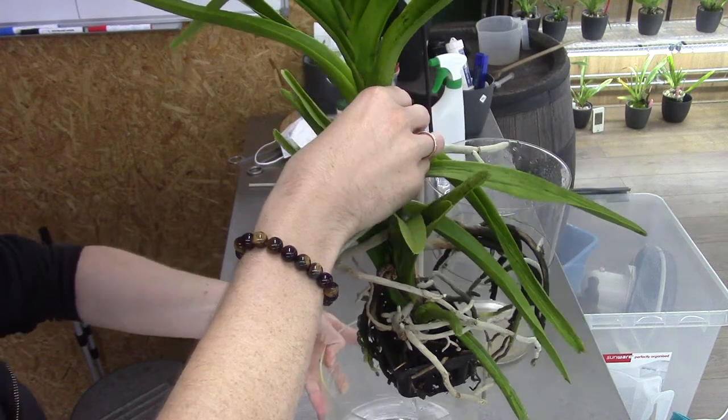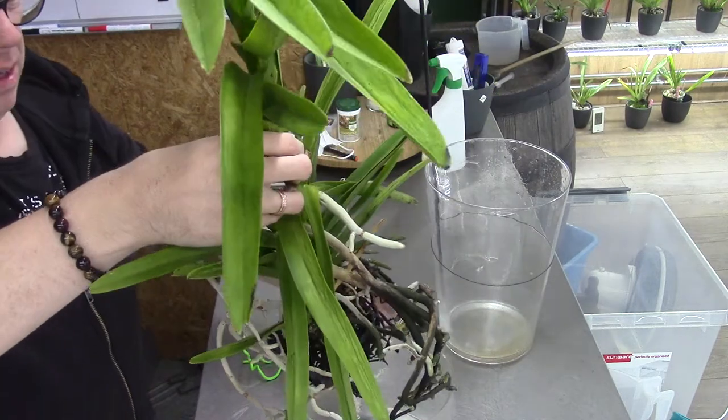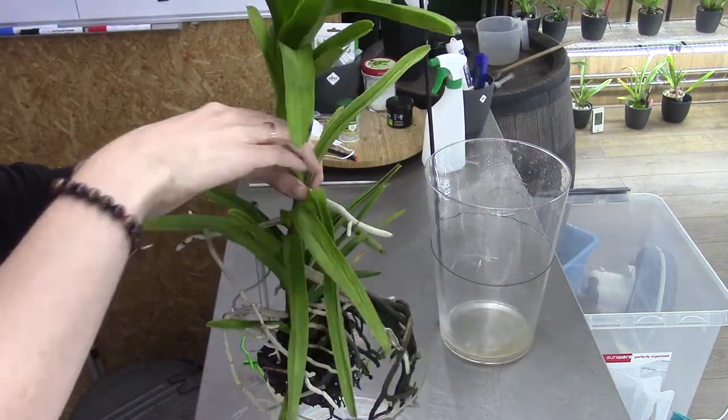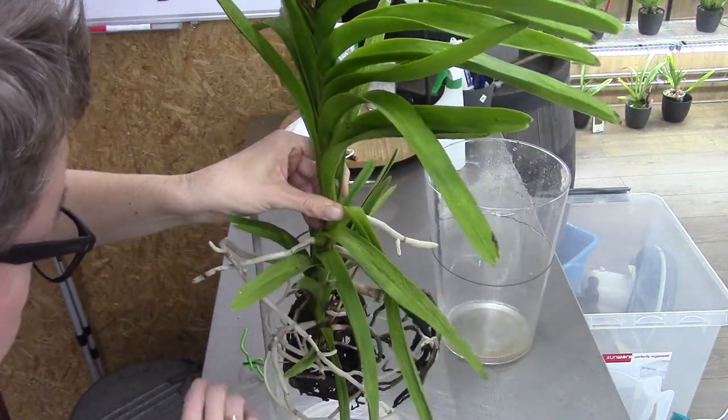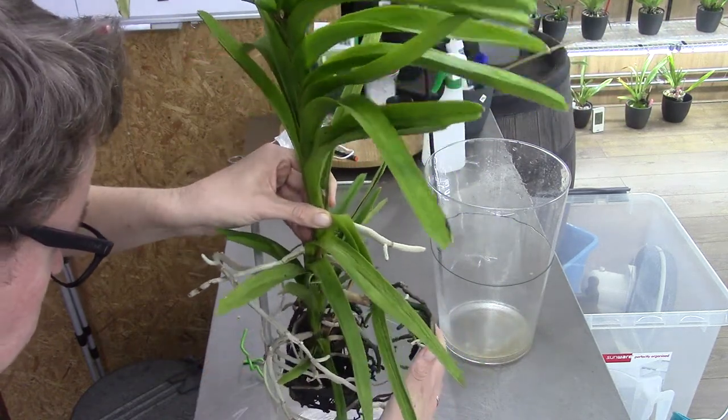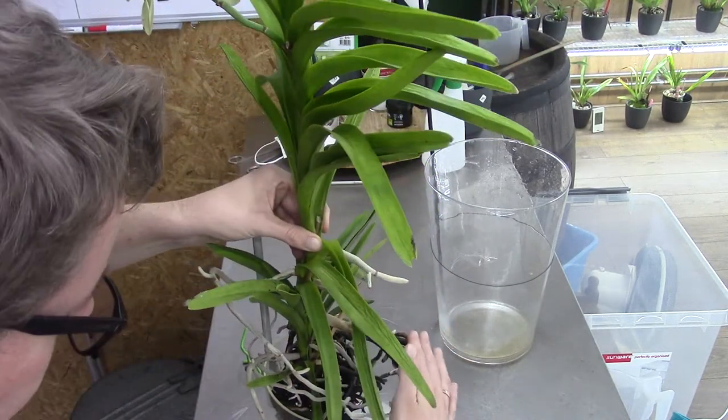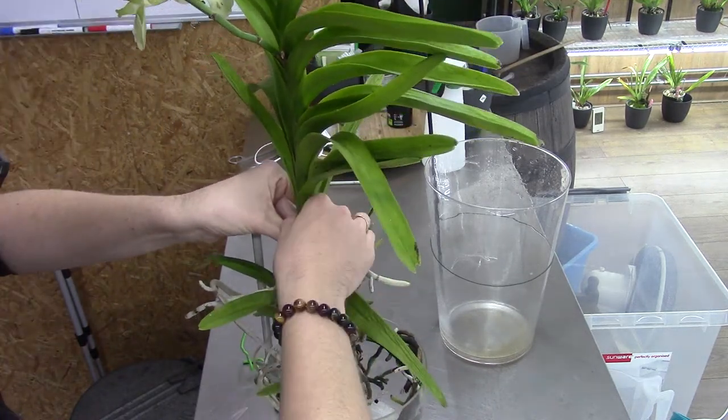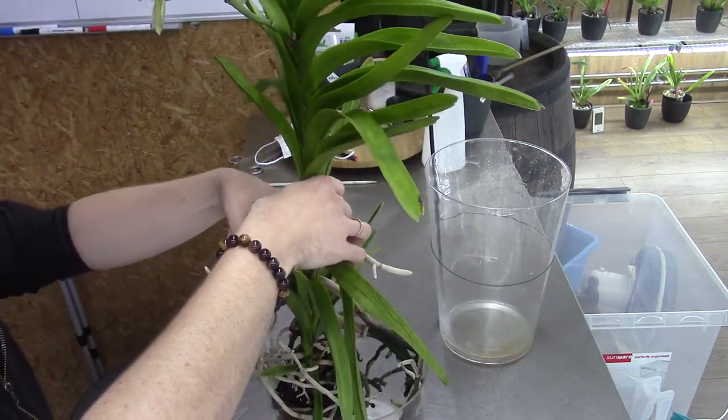I think because the root system is not that long, we can use this vase for this beautiful orchid. I just watered it today, so the roots should be a little bit more flexible. Let me try to get it in. And there we go. I try to take my time for these kinds of things because I don't want to break any roots of course, because we need them.